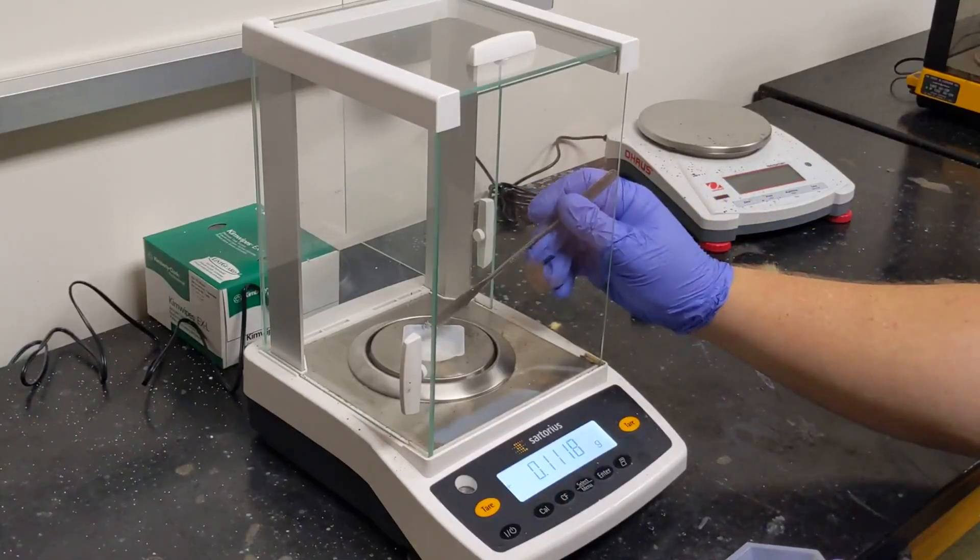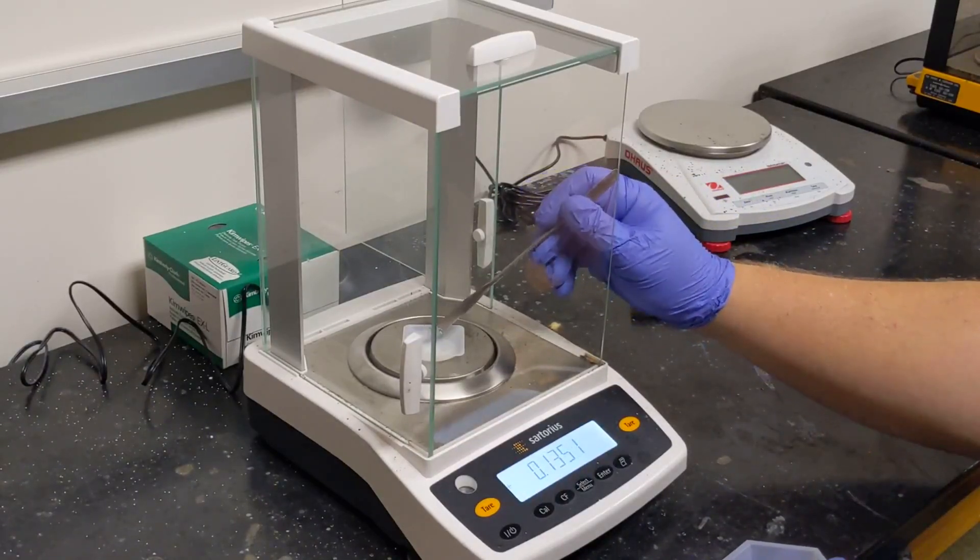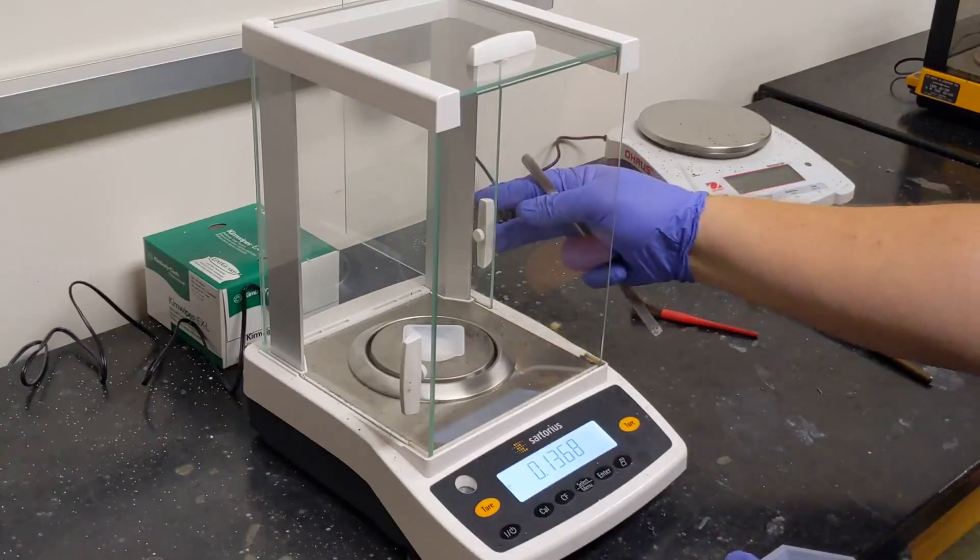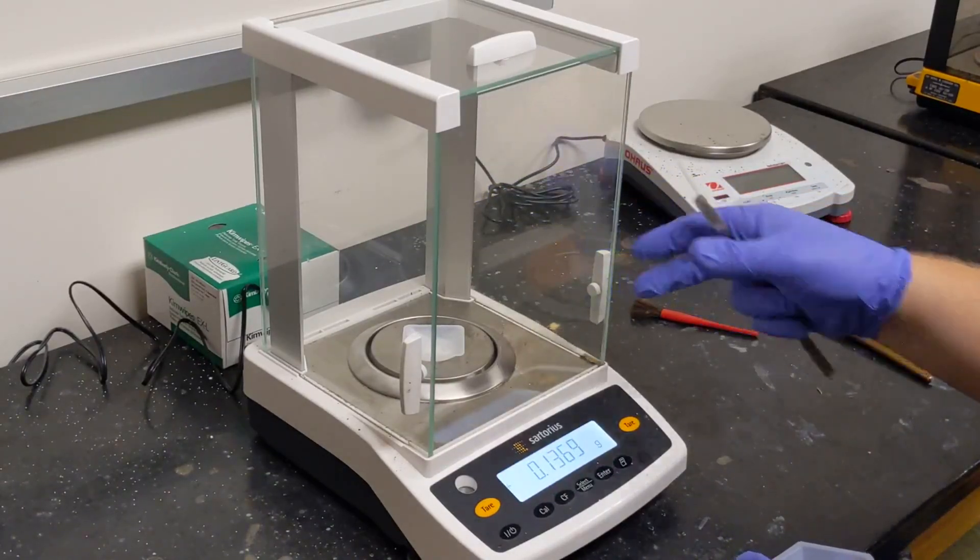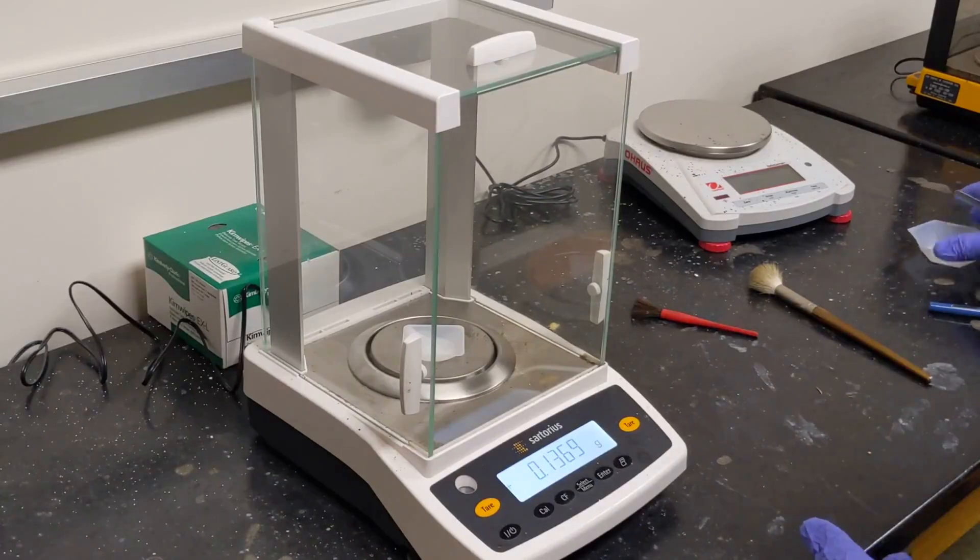You'll see the mass displayed on the screen of the balance. Once we have our desired amount, we're going to slide the door closed, give it a second for the mass to settle, and then record this mass in our laboratory notebook.